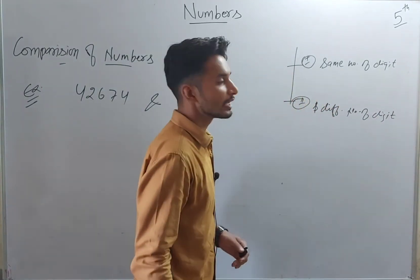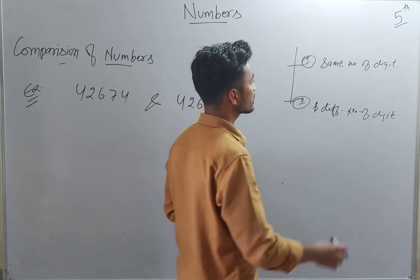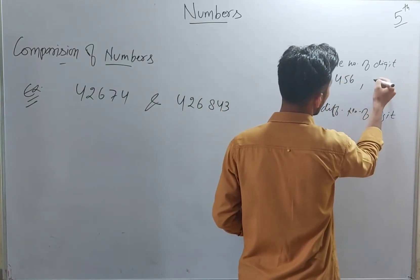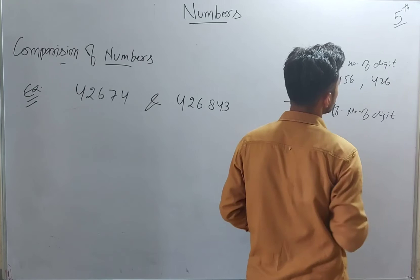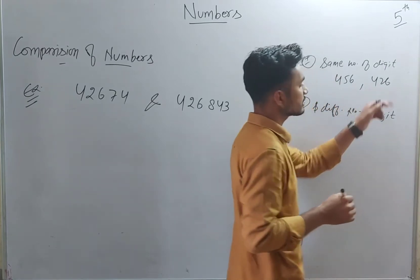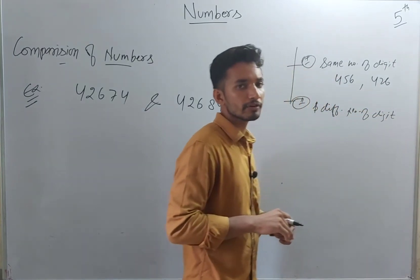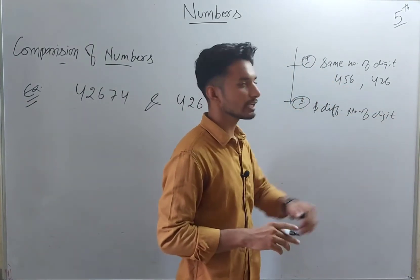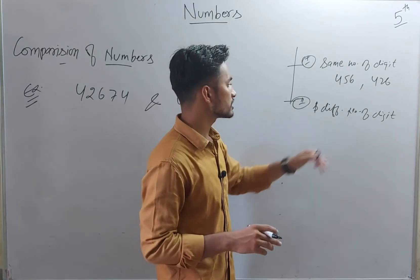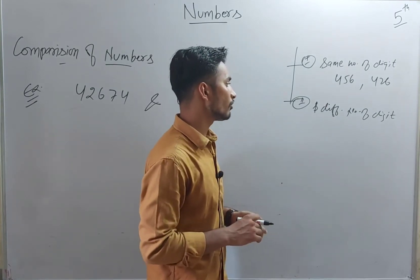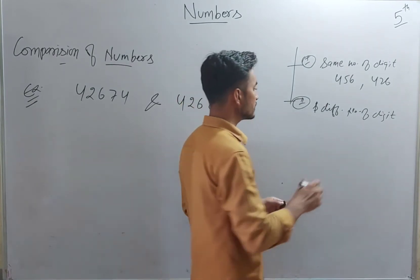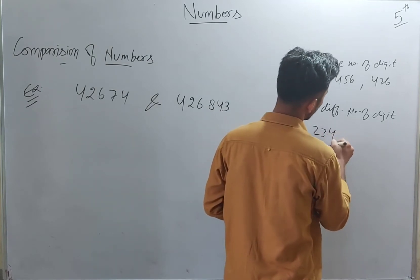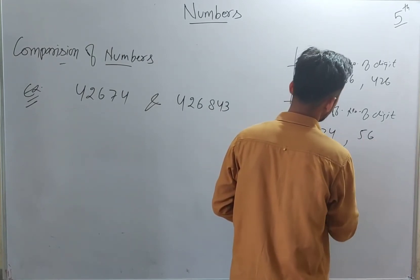The examples for the first case — same number of digits — are 456 and 426, both containing the same number of digits. For the second case — different number of digits — an example would be 234 and 56.